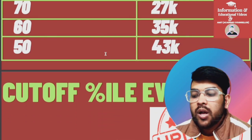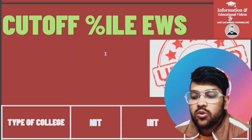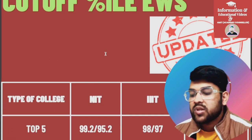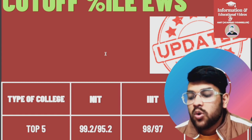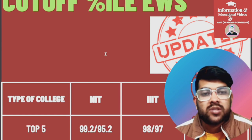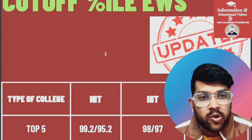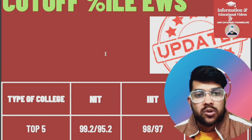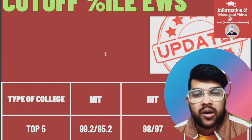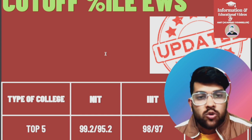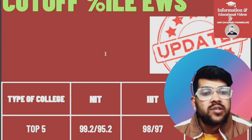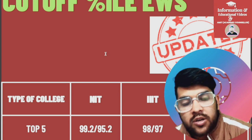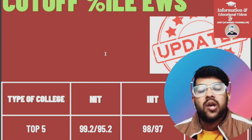Now I will talk about the minimum percentile for EWS category to get into an NIT, Triple IT, or GFTI college. For top 5 NITs it is 99.2 — that is for CSC branch. Please listen carefully because this data is important to understand. For NIT, 99.2 means CSC branch; after that, the lower branch means the lowest possible branch to just get into a top 5 college.